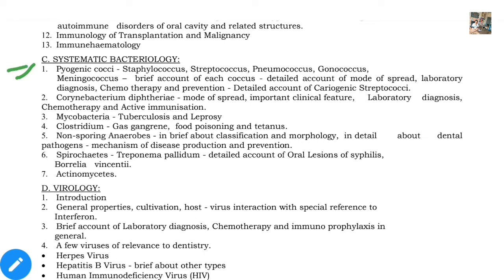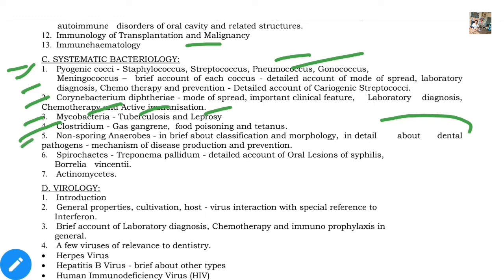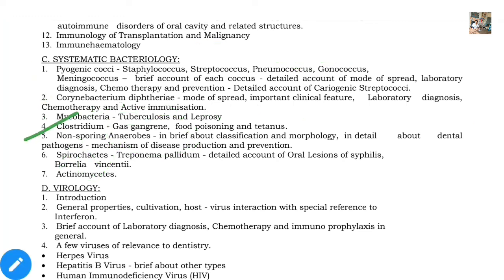The list includes staphylococcus, streptococcus, pneumococcus, gonococcus, and meningococcus. After that, Corynebacterium diphtheriae — direct questions come on this; lab diagnosis is also very important for all of them. After that, mycobacteria and clostridium — mycobacteria causes tuberculosis and leprosy; clostridium causes gas gangrene, food poisoning, and tetanus. You should know which disease is caused by which bacteria. After that, non-sporing anaerobes — these are also asked in viva, so do not ignore them.